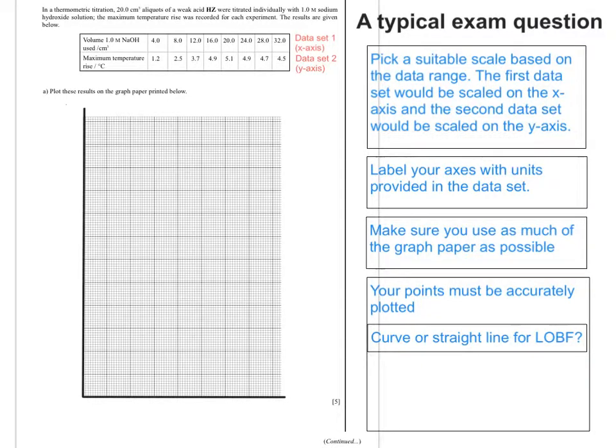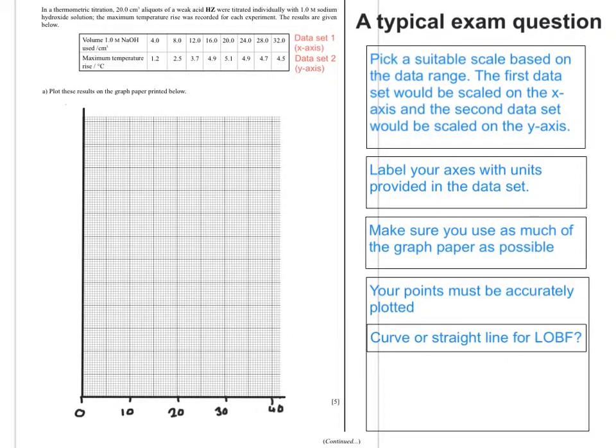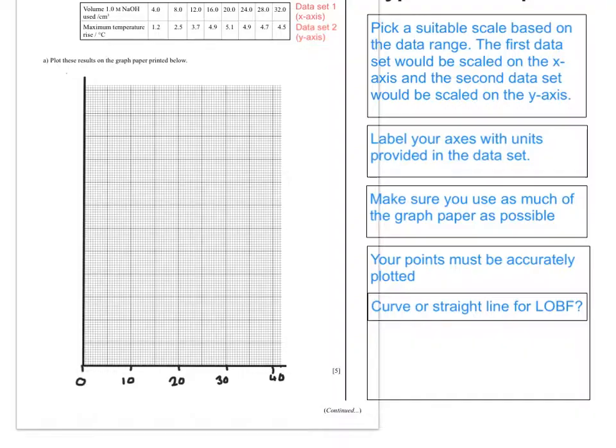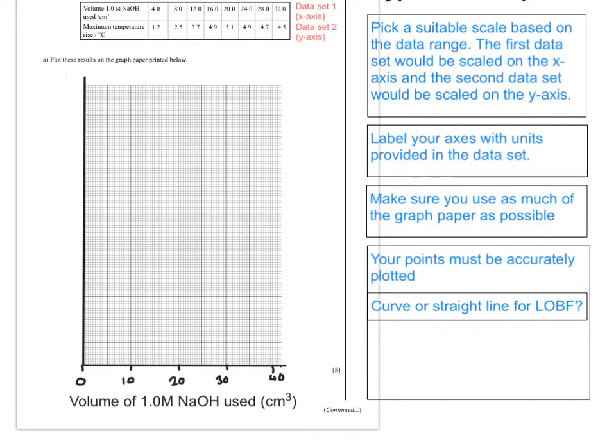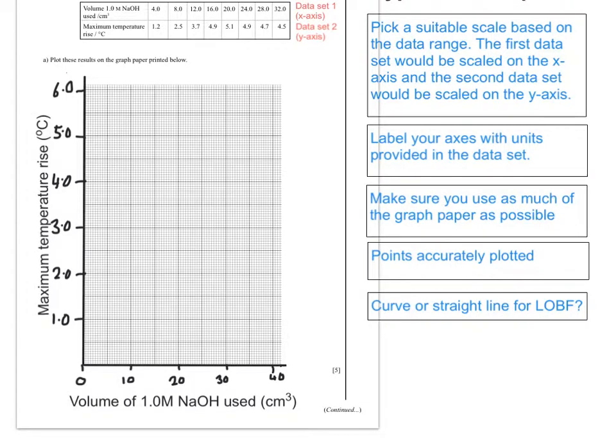Looking at my data set 1, it goes from 4 up to 32. So I pick a suitable scale that allows those numbers to fall within it. Taking one large square to mean 10, I've now labeled my axes and used as much of my graph paper as possible. Now I have to plot the points.